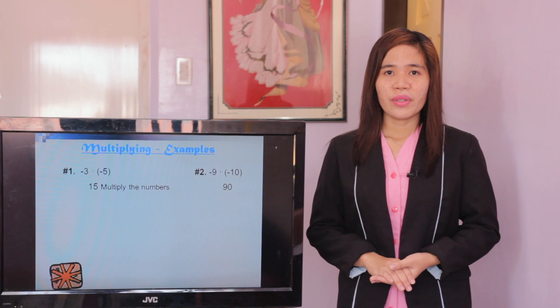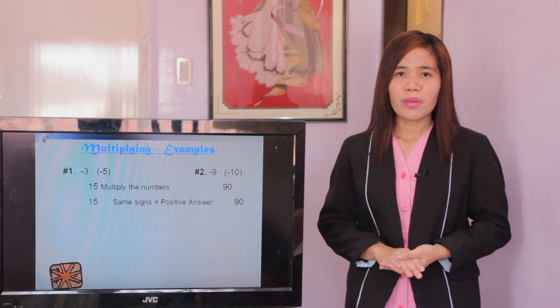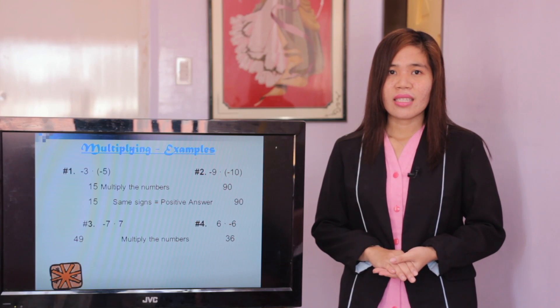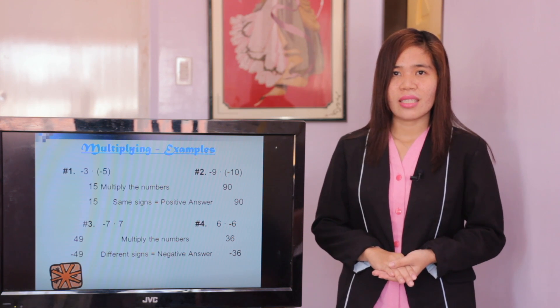Let's check the answers by applying the procedures. For examples 1 and 2: multiply the numbers — 3 times 5 equals 15, and 9 times 10 equals 90. They have the same signs, so they have positive answers: positive 15 and positive 90. For examples 3 and 4: multiply the numbers — 7 times 7 equals 49, and 6 times 6 equals 36. They have different signs, so they have negative answers: negative 49 and negative 36.